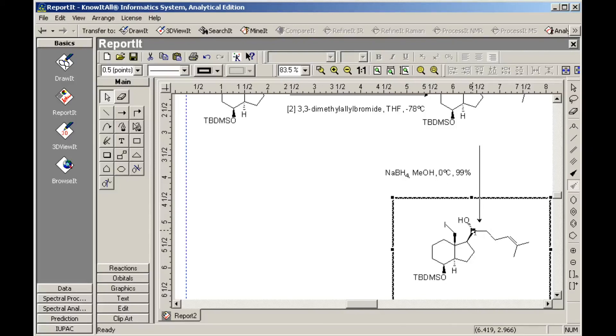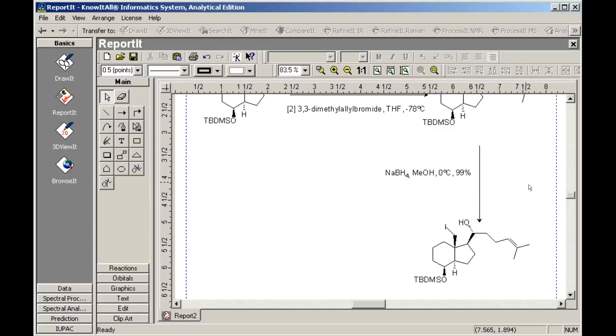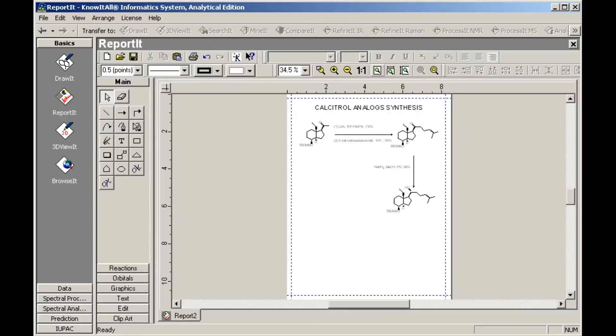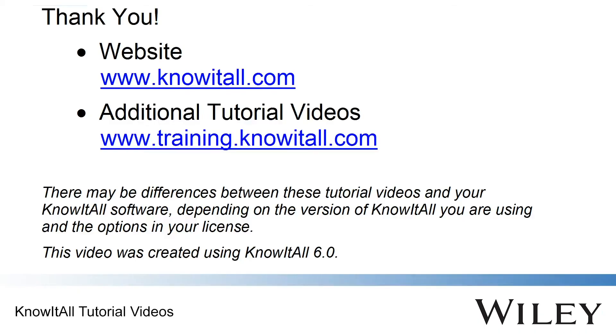Click outside the structure to close the drawing tool bar. Finally, use the zoom tool bar to view the finished report. This concludes our demonstration of how to draw chemical reactions in the know-it-all informatics system.